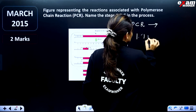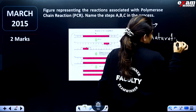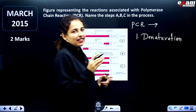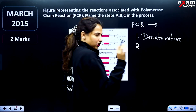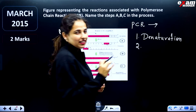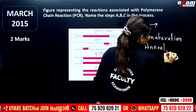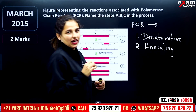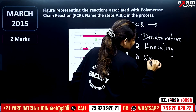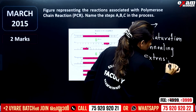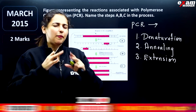Step one is denaturation — at high temperature we separate the parent DNA strands. Step two is annealing — at lower temperature we attach the primers. Step three is extension — we attach the DNA polymerase and synthesize the DNA fragments.